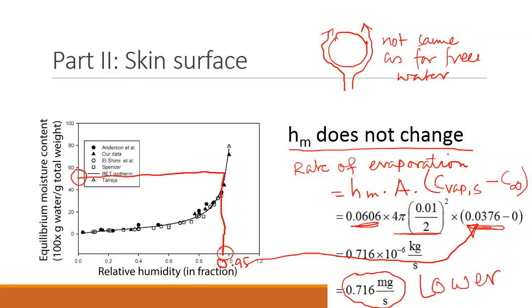And so that gives us the final amount of water lost as 0.716 milligrams per second, which is slightly lower as we expected, because the skin has water that is also being attracted to the skin solids. So then that water is not as free to evaporate. So its vapor pressure is lower, so it's going to evaporate less.